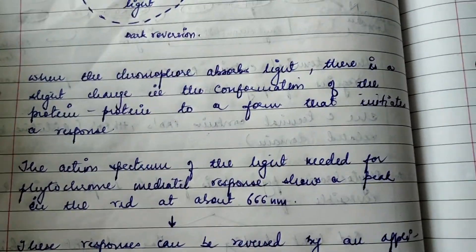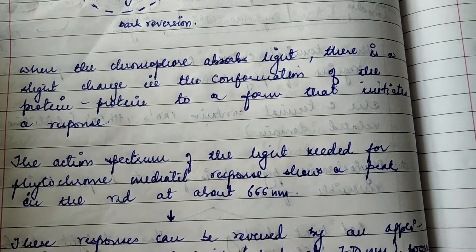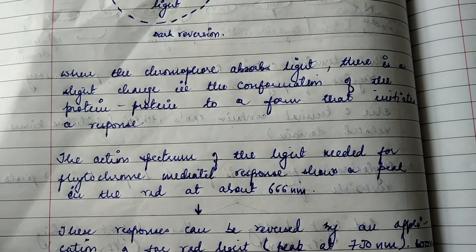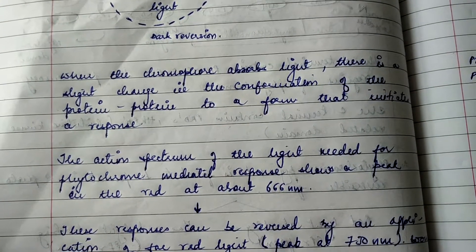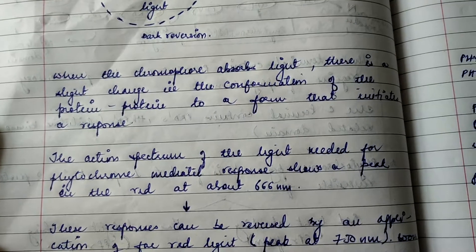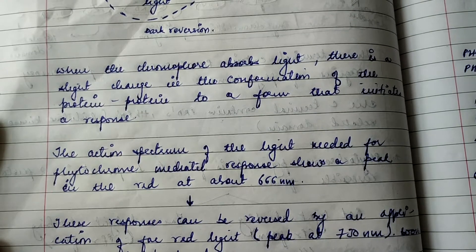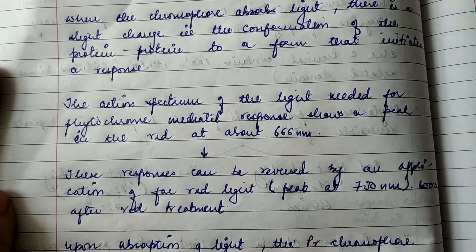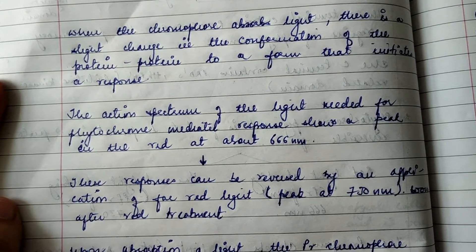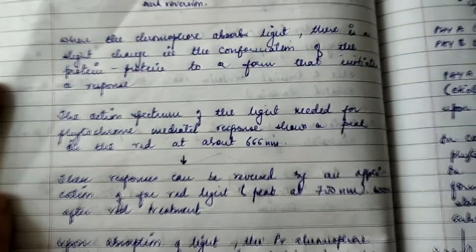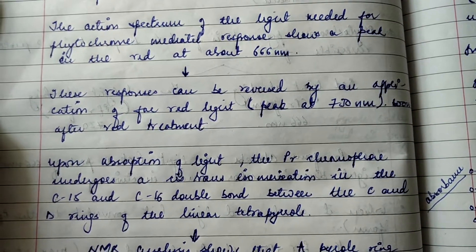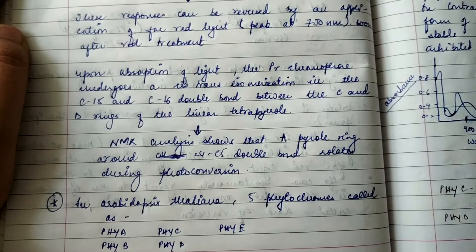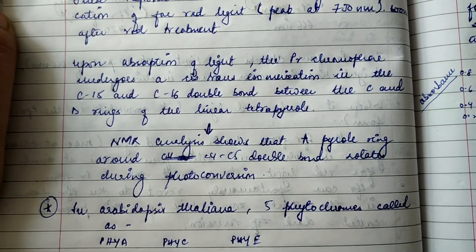When the chromophore absorbs light, there is a slight conformational change in the protein that initiates a response. The action spectrum of the light needed for phytochrome-mediated responses shows a peak in the red at about 666 nanometers. These responses can be reversed by the application of far-red light at 730 nanometers, applied after red light treatment.